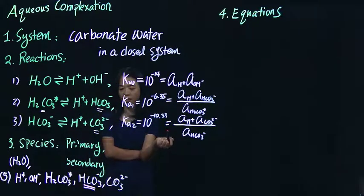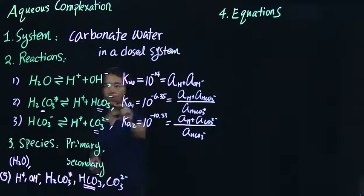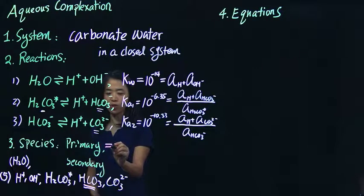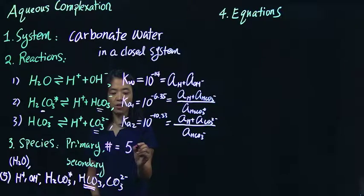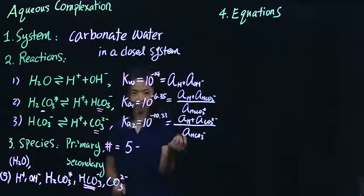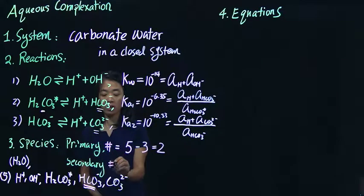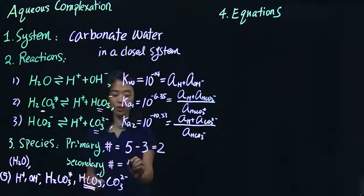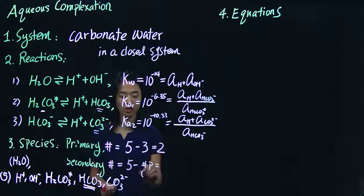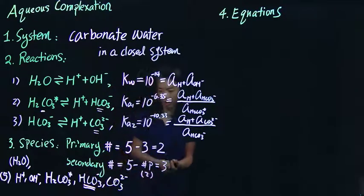How many primary species do we have? The system has five species and three algebraic relationships, so the number of primary species equals total species minus the number of relationships: five minus three equals two primary species. The rest are secondary species — total species minus primary species equals five minus two, so we have three secondary species.